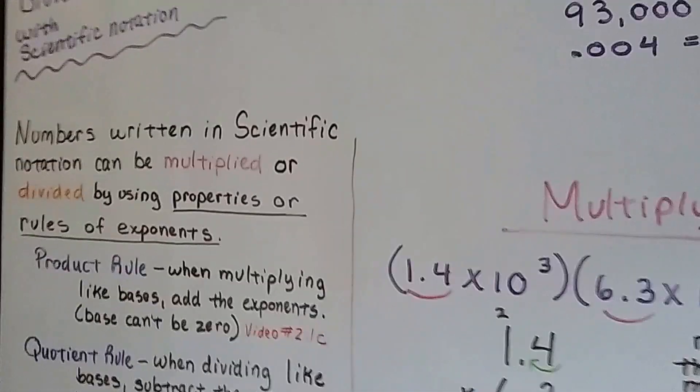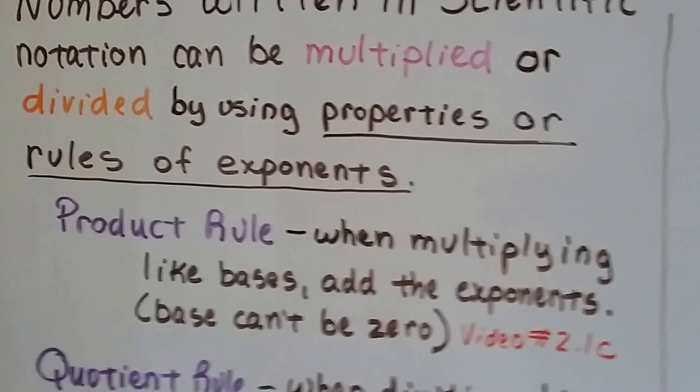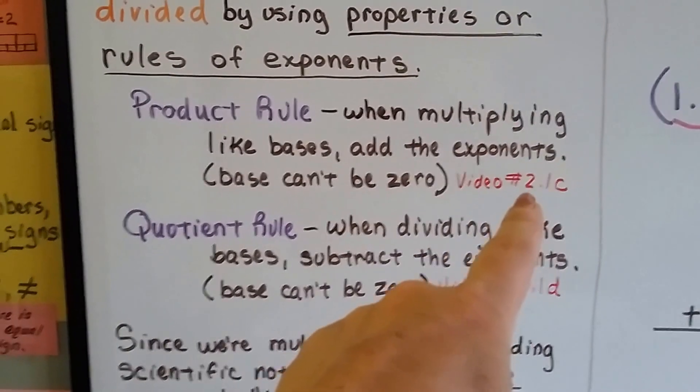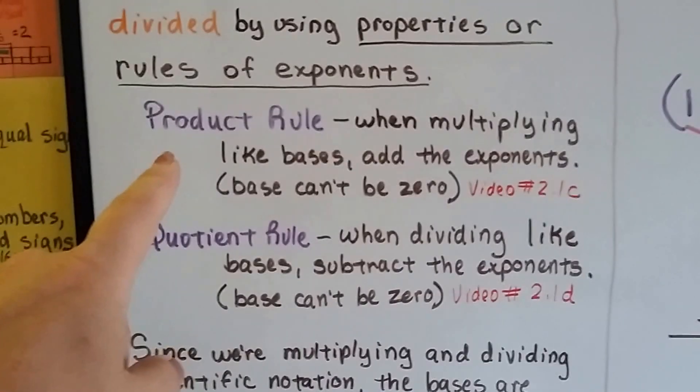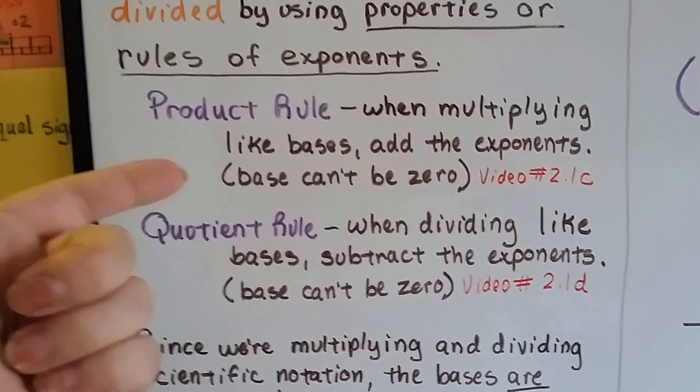Numbers can be written in scientific notation and they can be multiplied or divided by using properties or rules of exponents. In video 2.1c, we learned about the product rule. And it says when multiplying like bases, we add the exponents. That means the bases can't be zero.